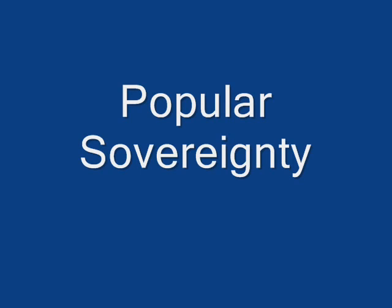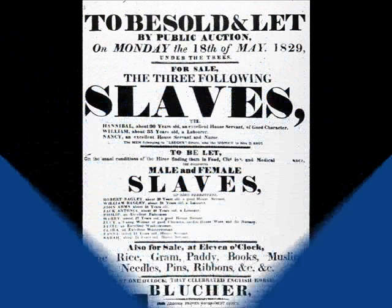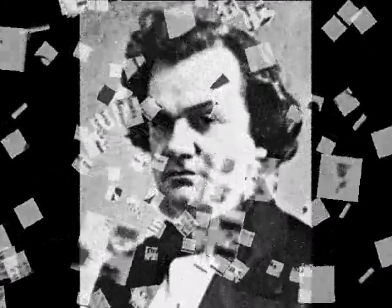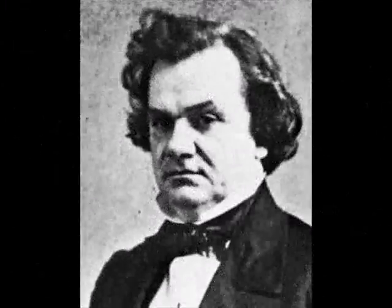Popular Sovereignty. Popular sovereignty in U.S. history was a doctrine under which the status of slavery in the territories was to be determined by the settlers themselves. Stephen A. Douglas, the principal promoter of the doctrine, wanted the choice made in the early stage of settlement.